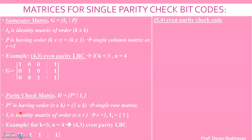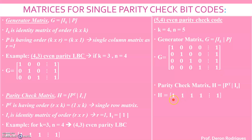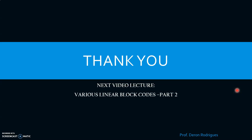The same can be found for the (5,4) even parity check code. The generator matrix will have an identity matrix of order 4 and a single-column matrix having 4 rows. The parity check matrix will be a single-row matrix having 4 columns and I_1. Thank you everyone — in the next lecture we will be discussing Repeated Codes and Hadamard Codes.